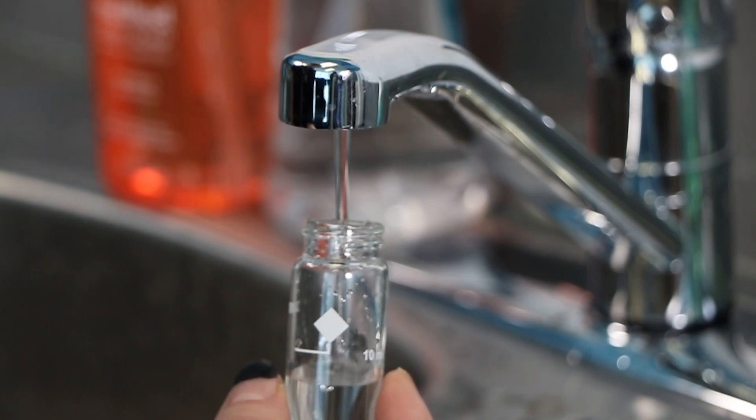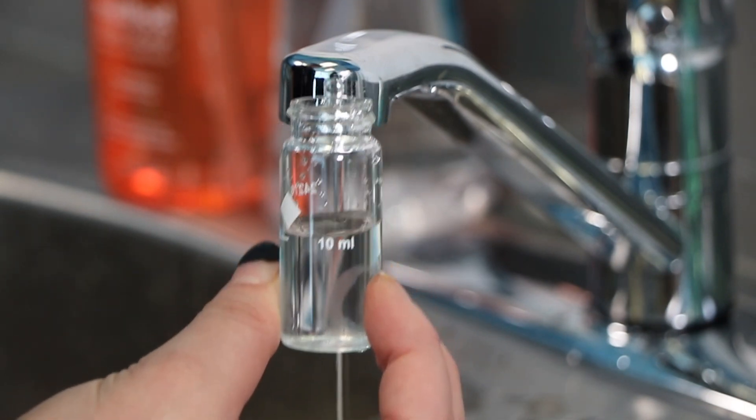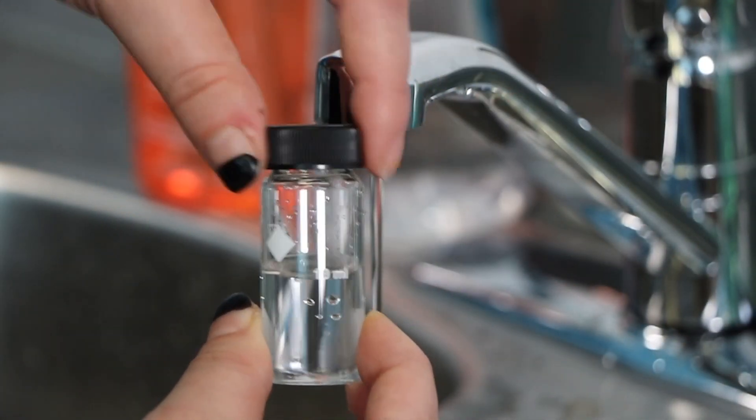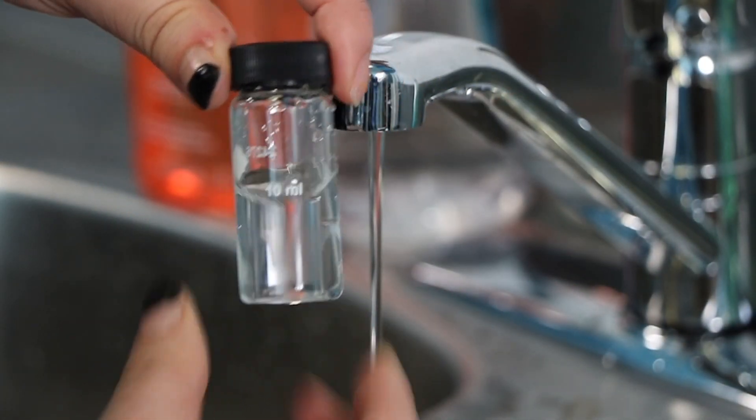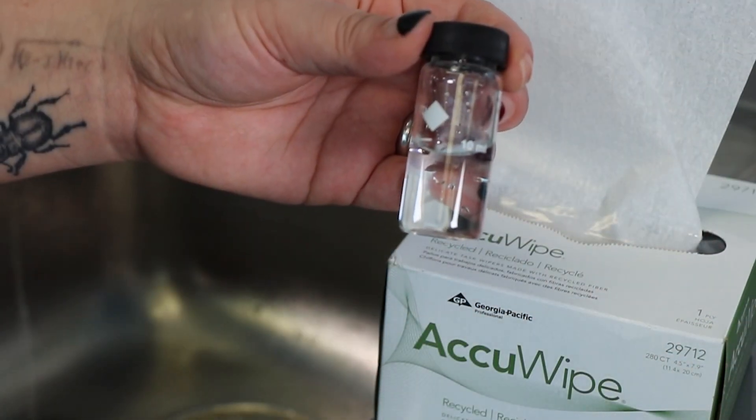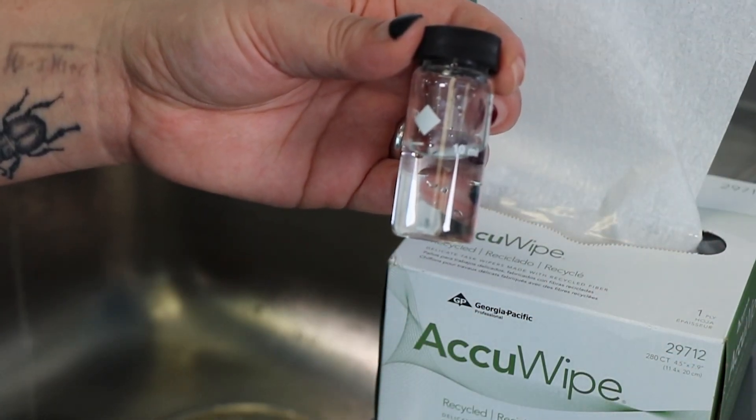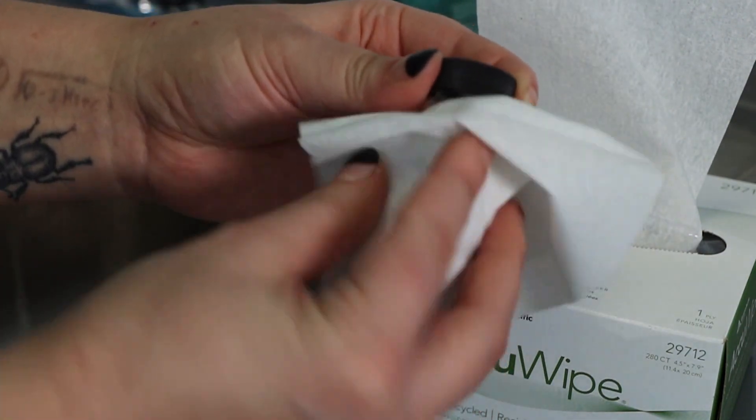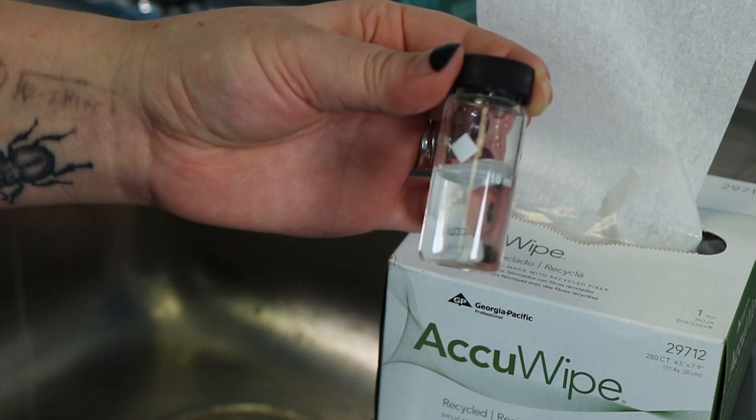Fill the sample cell, also called a vial, to the 10 mm mark and put on the cap. Carefully dry the outside of the sample vial with a lint-free cloth or tissue like an acuwipe to remove fingerprints and any traces of liquid. Here's a tip: be careful not to scratch the outside of the sample vial as this can affect the reading.